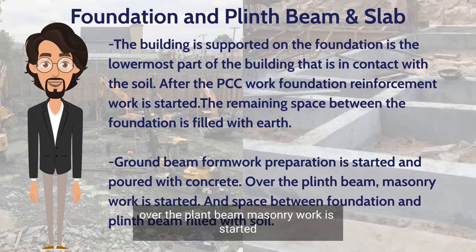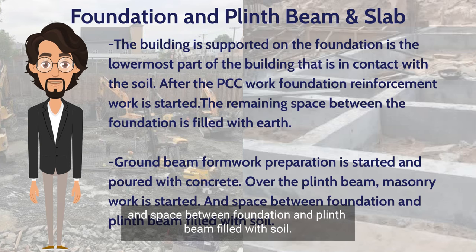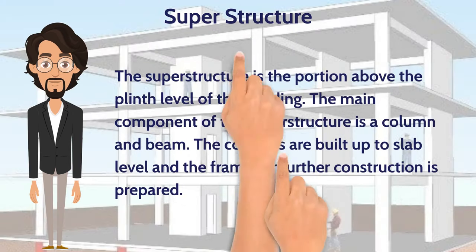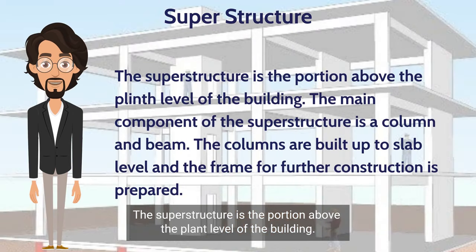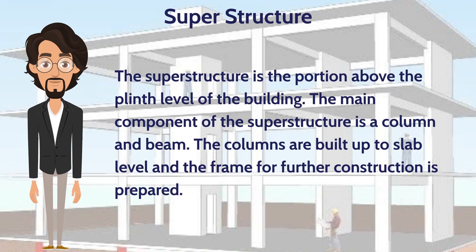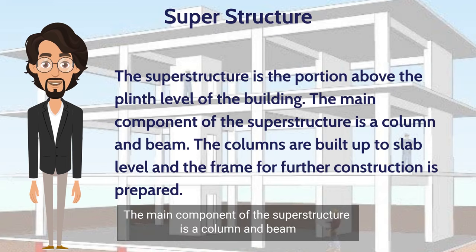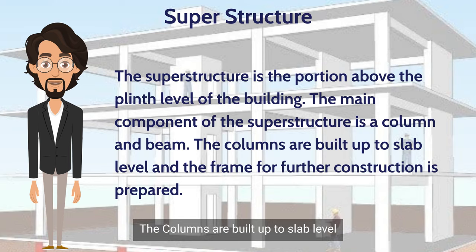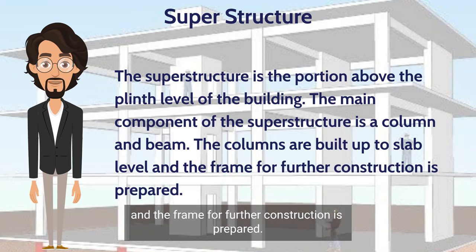After foundation work is done, ground beam formwork preparation is started and poured with concrete. Over the plinth beam, masonry work is started and the space between the foundation and plinth beam is filled with soil. The superstructure is the portion above the plinth level of the building. The main components of the superstructure are columns and beams, which are built up to slab level and the frame for further construction is prepared.